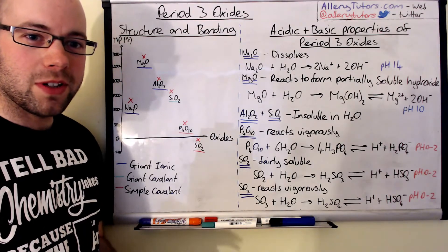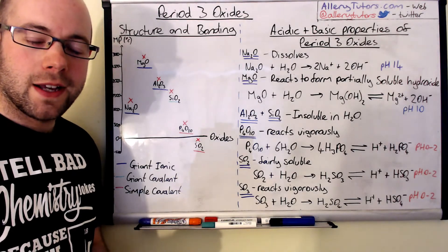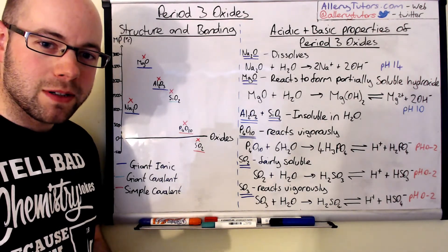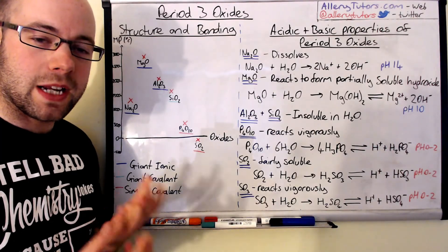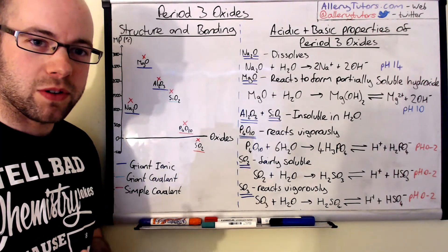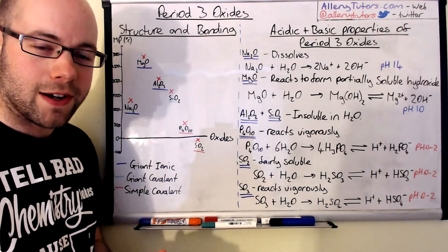So in this video, we're going to look at how the structure and bonding of period 3 oxides can impact on their melting points, and we're also going to look at the acidic and basic properties of period 3 oxides and show some equations and some observations as well when you do these reactions.